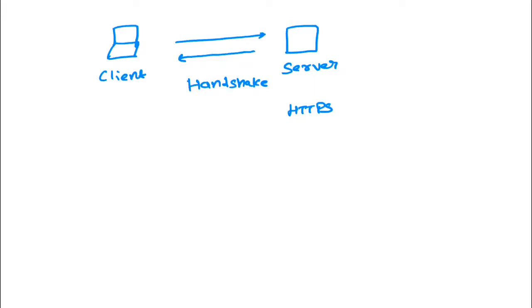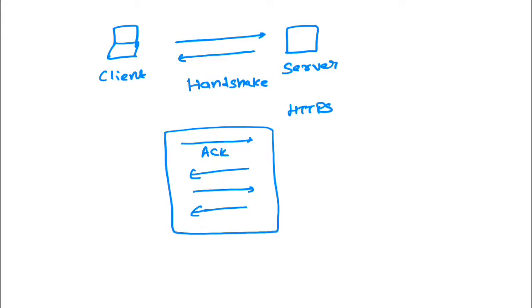The client sends certain acknowledgements and the server sends back acknowledgement confirming it has received them. Then there is a key exchange mechanism where both client and server authenticate with each other — the public key is exchanged between client and server, and the server authenticates based on the public key received from the client. This complete process is the handshaking mechanism that happens every time a client sends a request to the server.